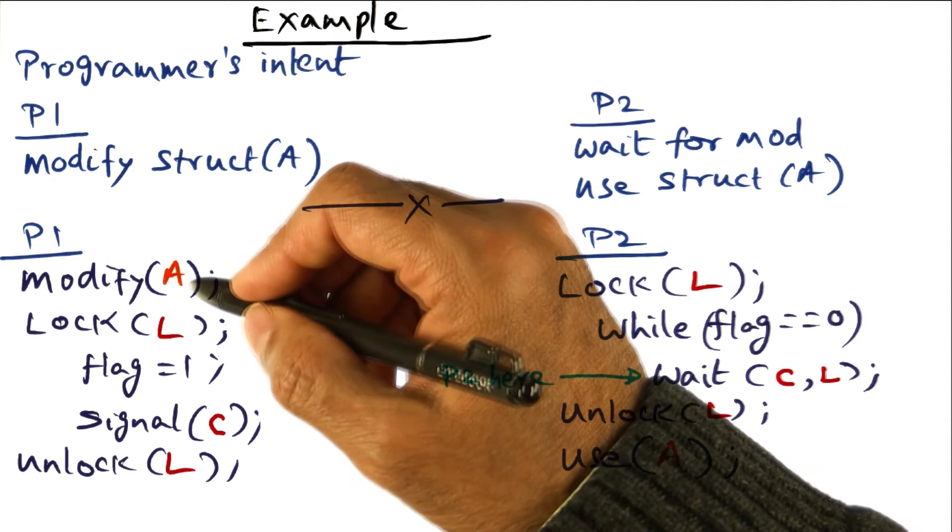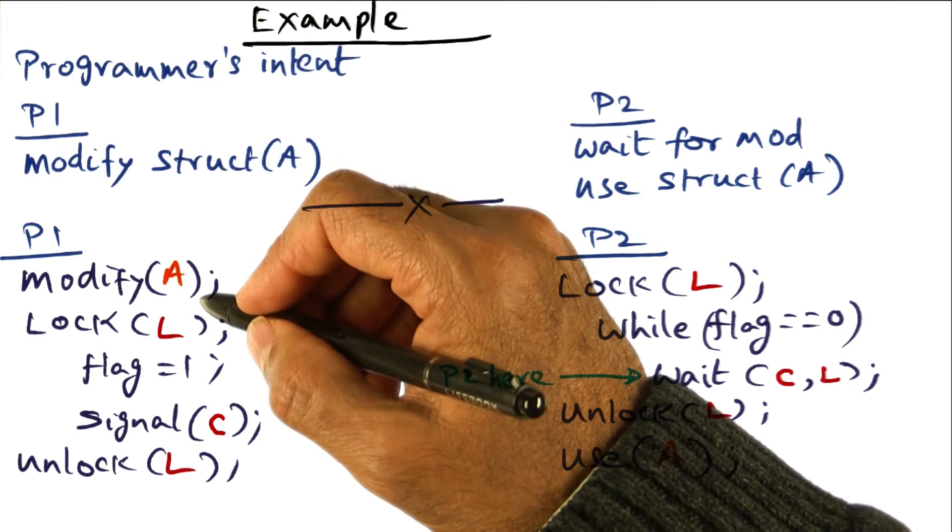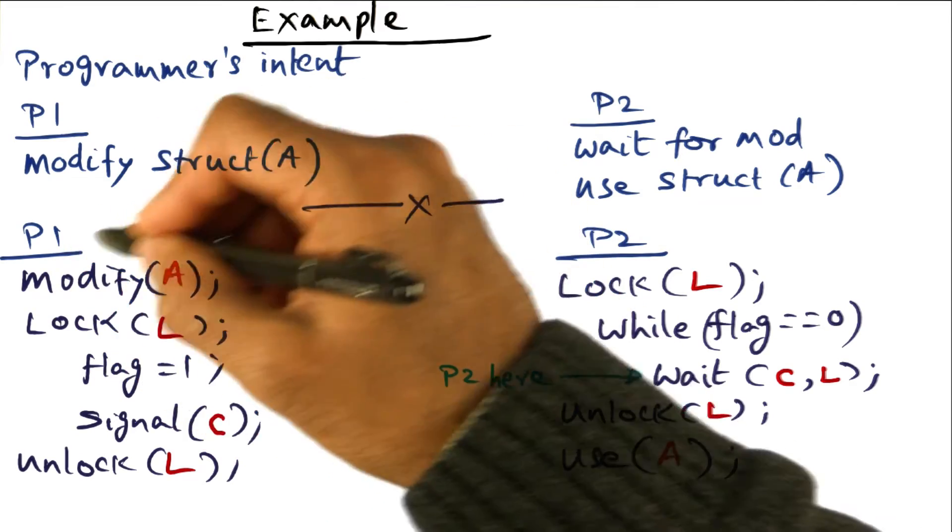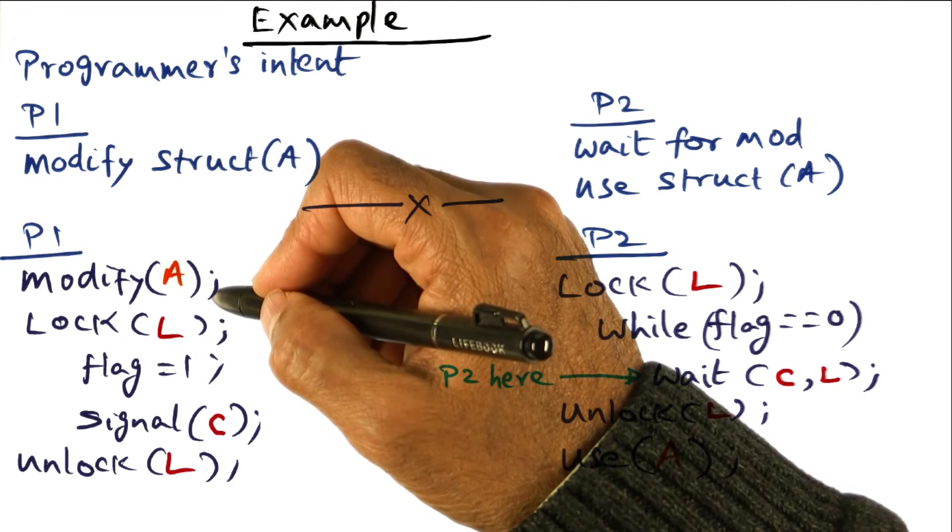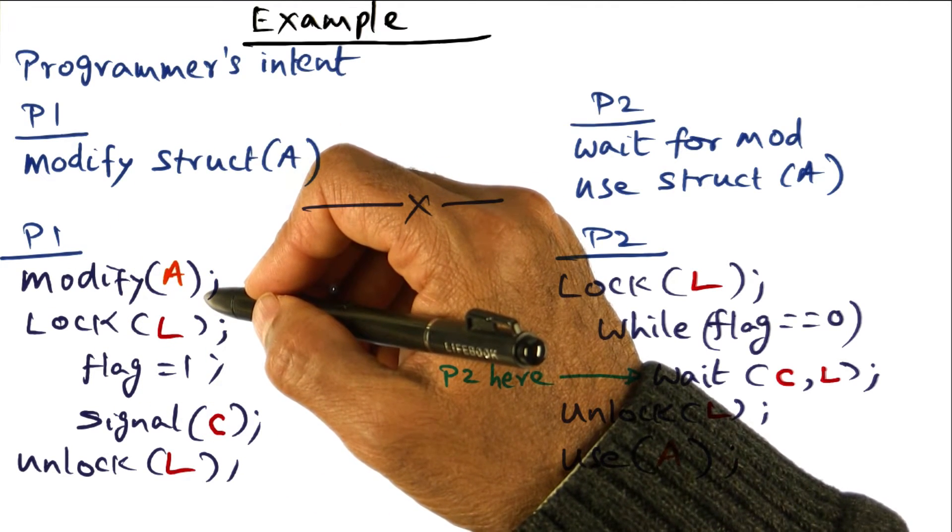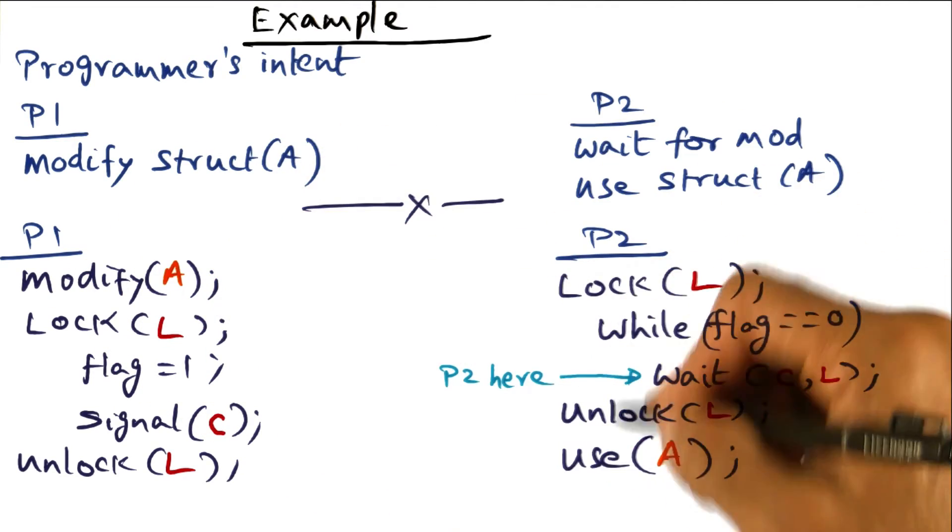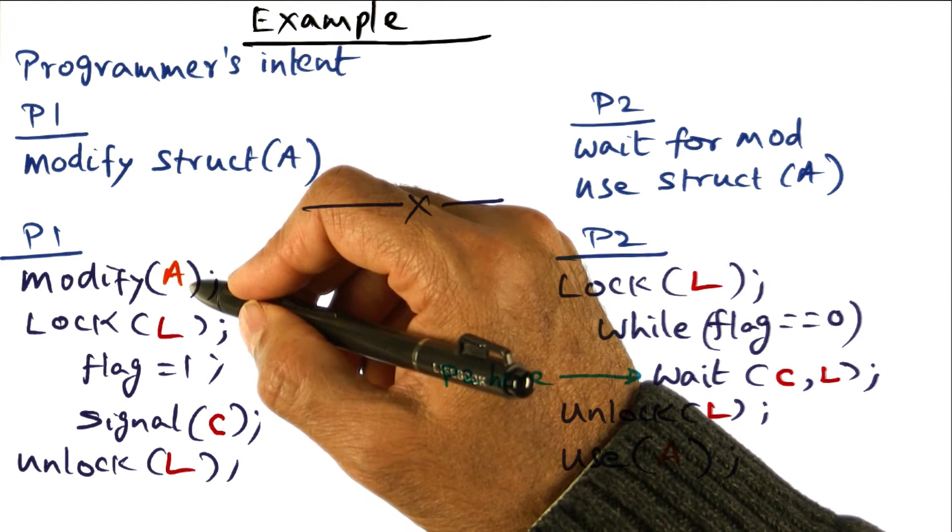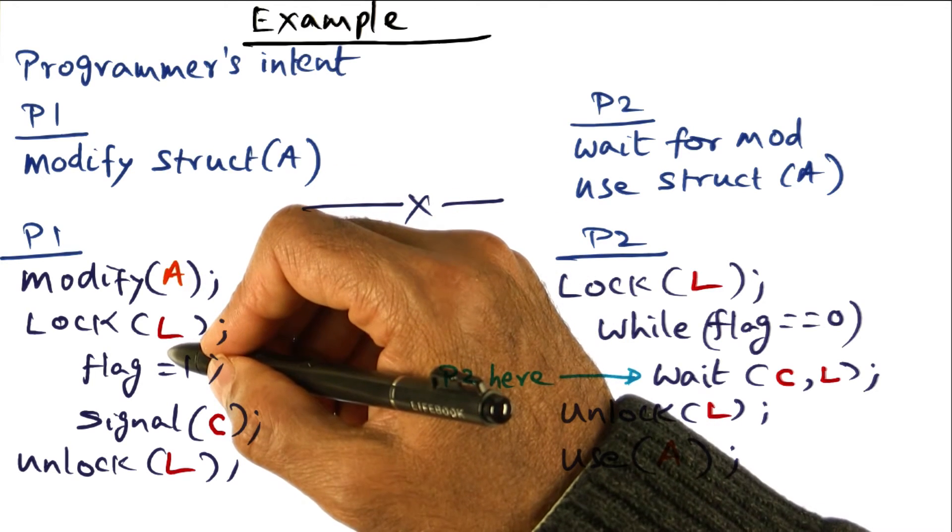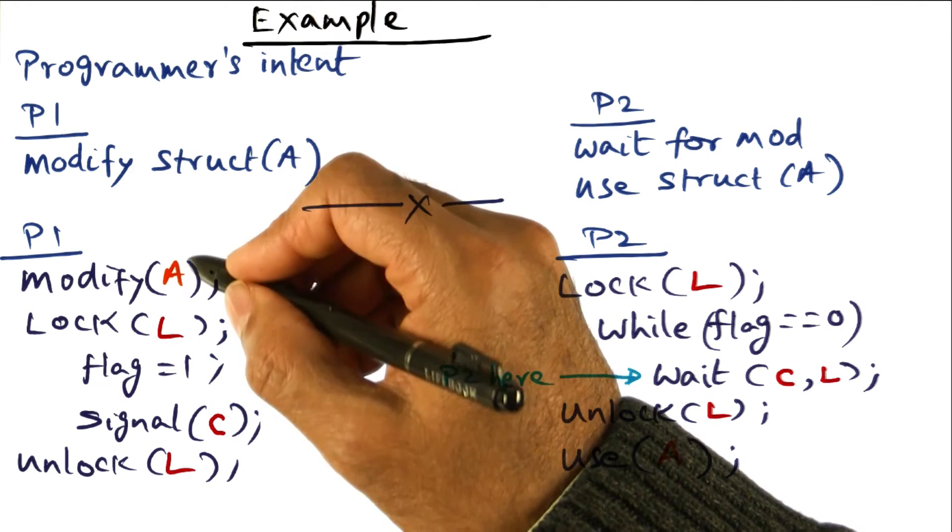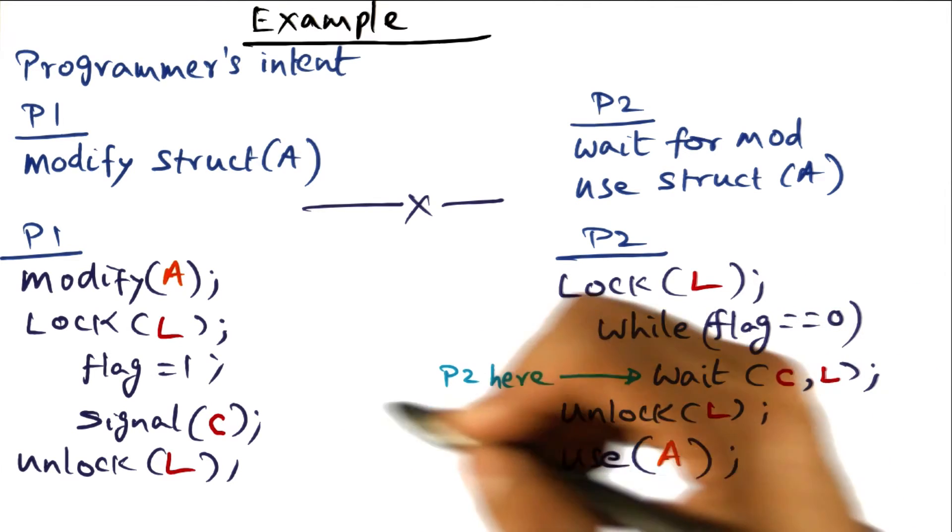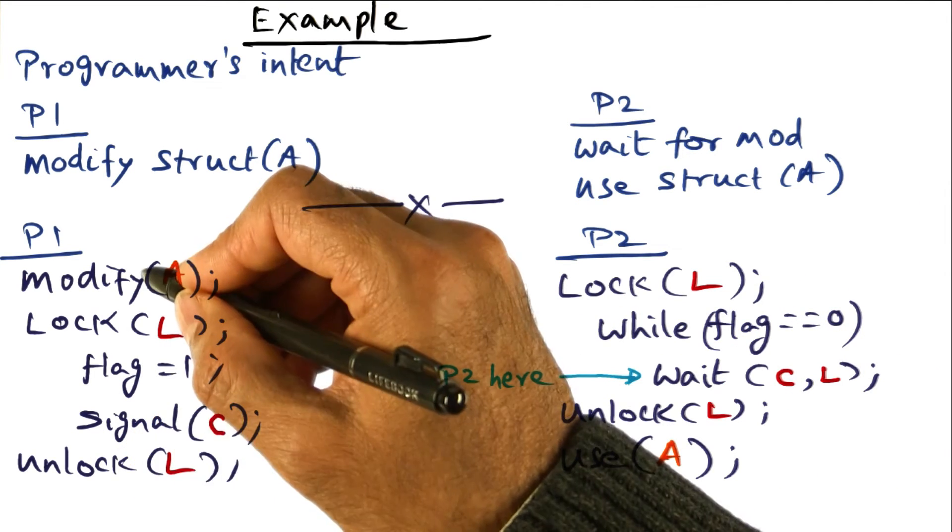So the important thing is, if we have an RC memory model, then all the modifications that I'm making here, that is modifying shared data structures, can go on in parallel with all this waiting that may be going on here. I don't have to block the processor to do every one of these modifications. The only point at which I have to make sure that these modifications have been made globally visible is when I hit the unlock point in my code.